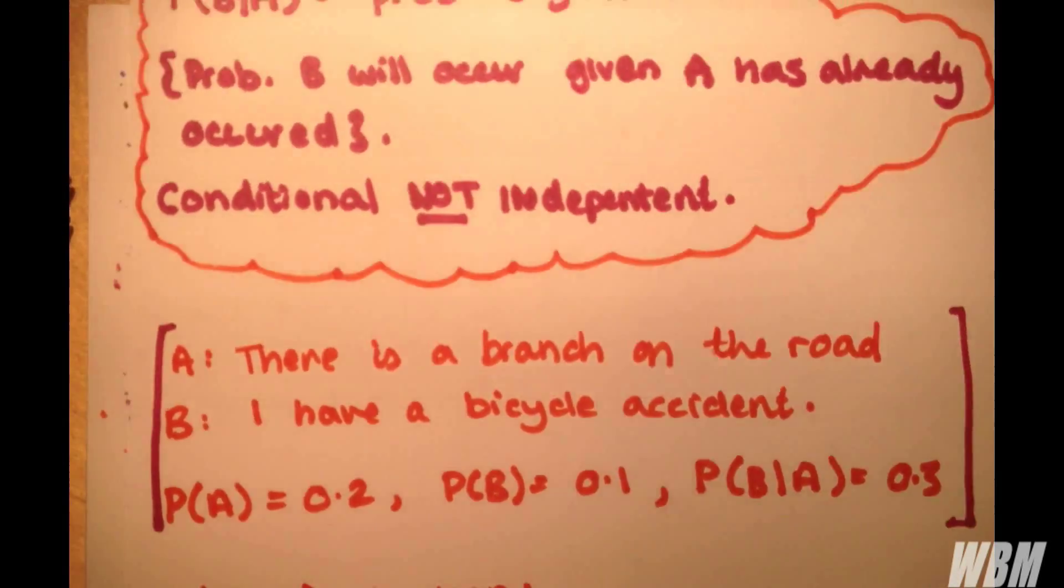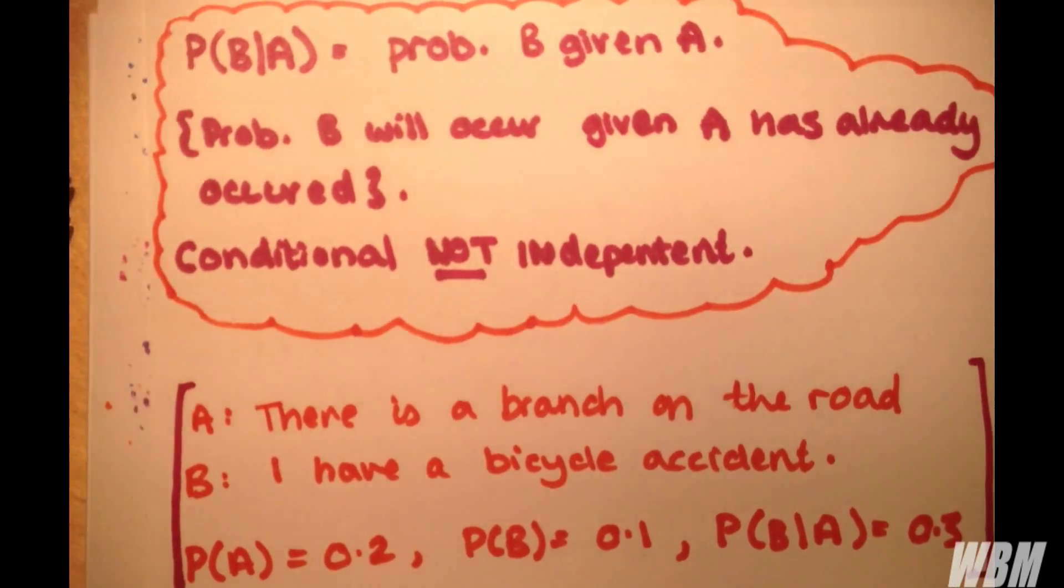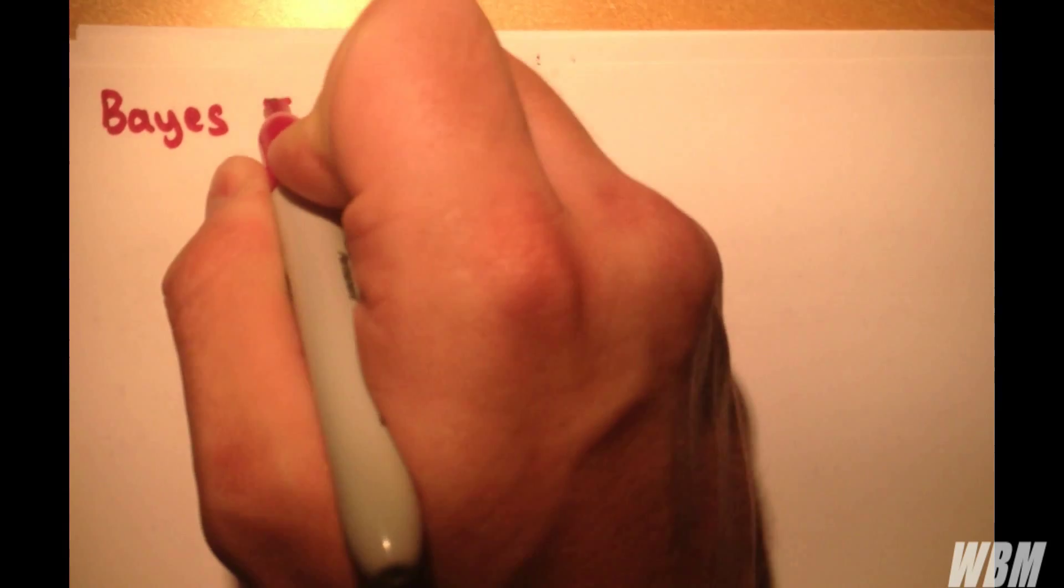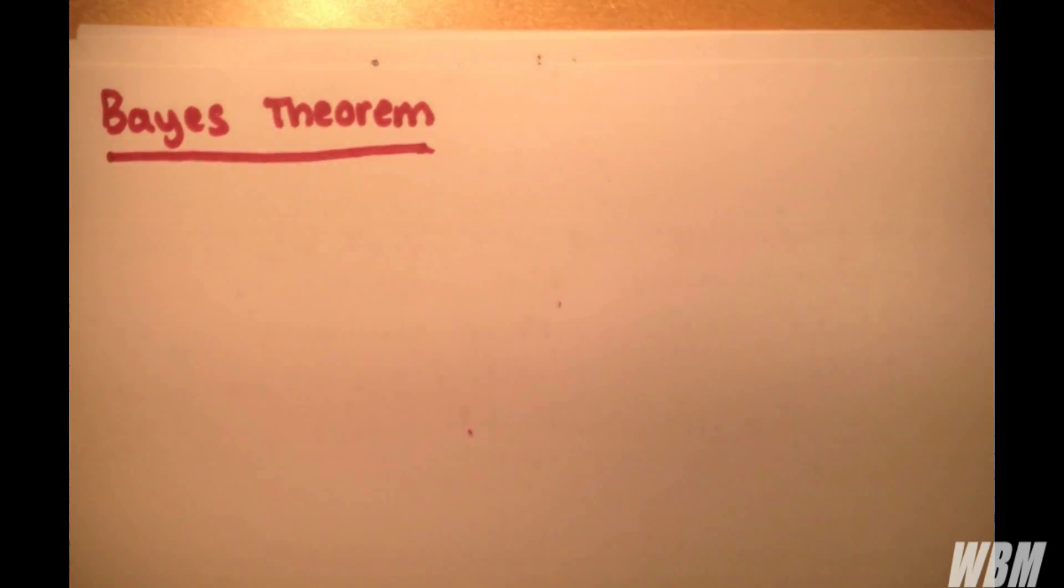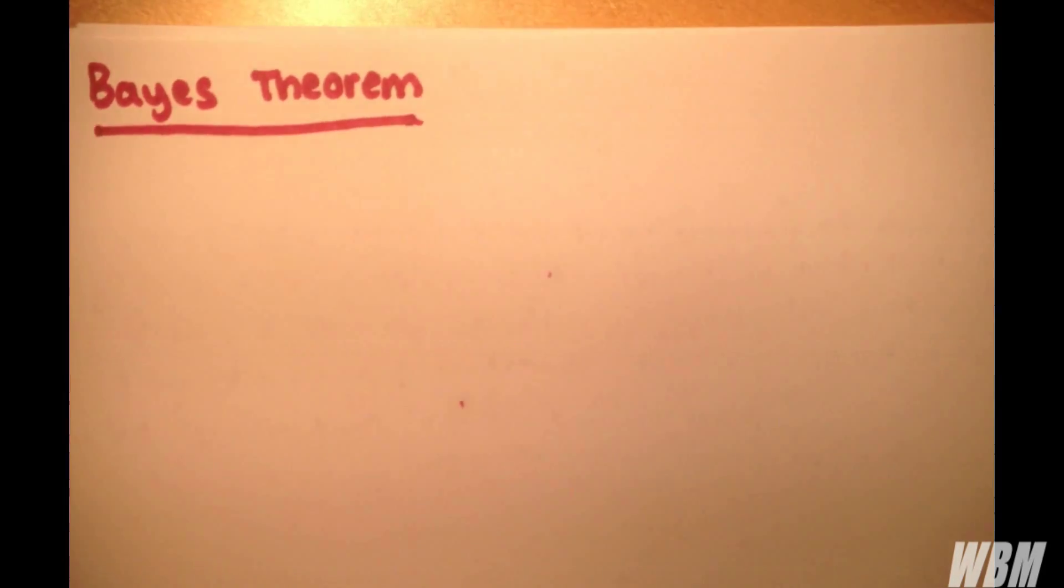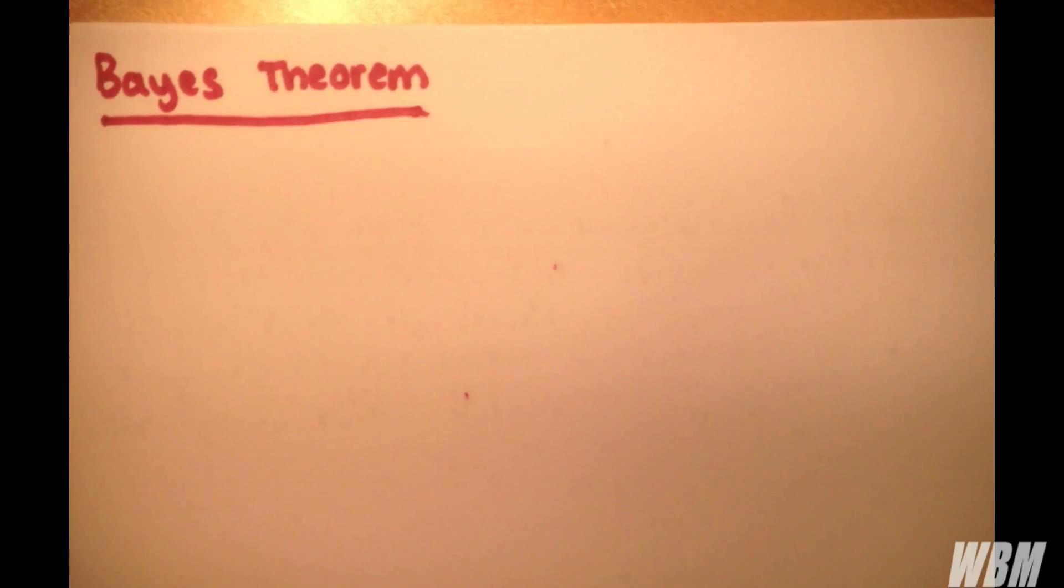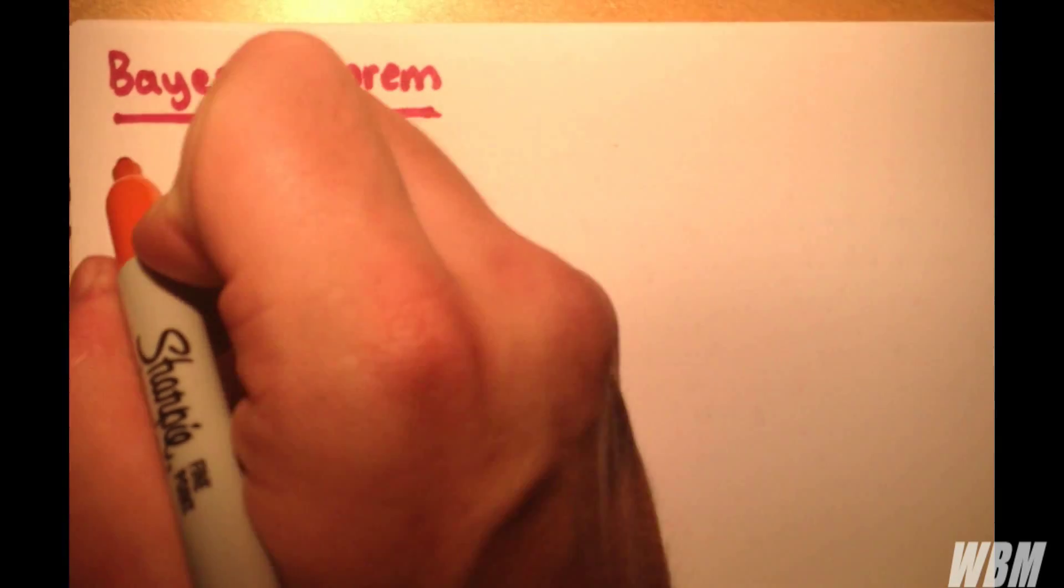So now I'm going to quickly outline Bayes' theorem. So Bayes' theorem in the general form, not the form that you just saw, we write as follows.